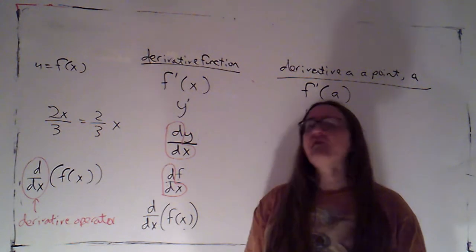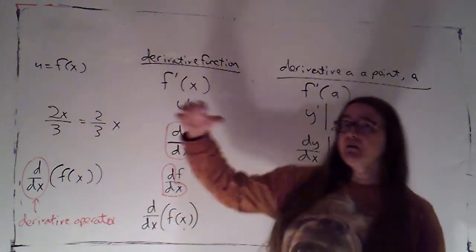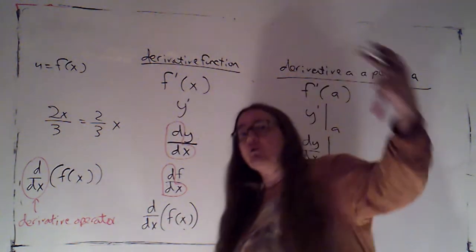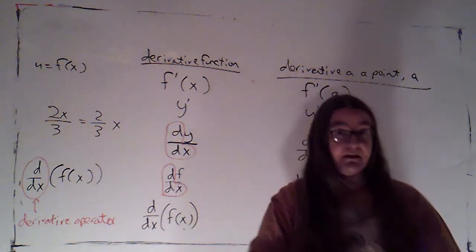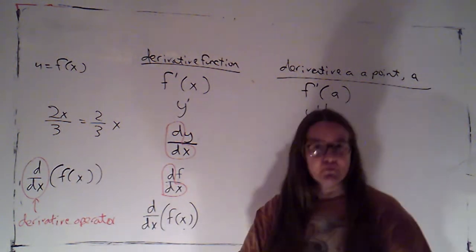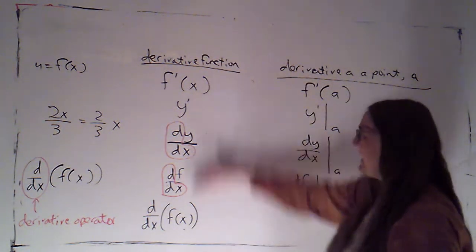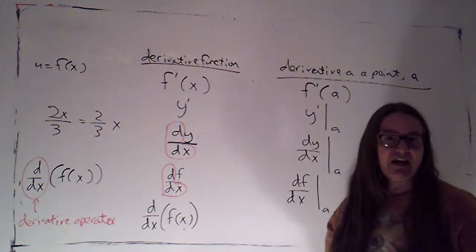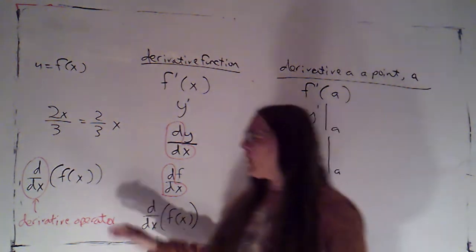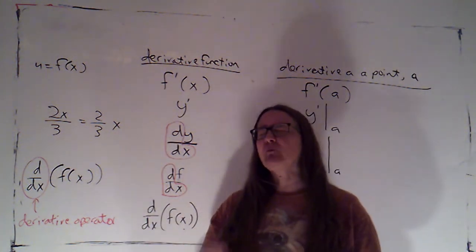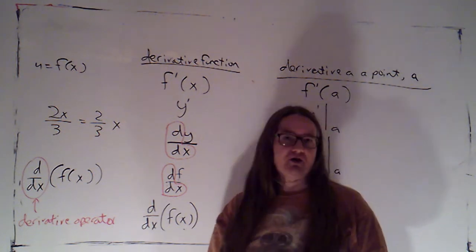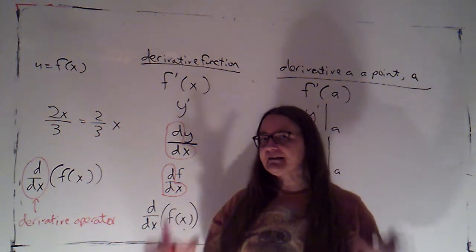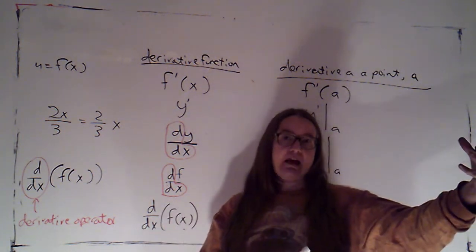So an operator is kind of like a function of functions. It's something where the input is a function and the output is a function. So I'm going to plug in f of x. What it's going to give out is the derivative of f, which I could denote with any of these bits of notation. An operator isn't quite a function of functions. It's actually a relation where the input is a function. There's no rule that says that an operator has to have a unique output.